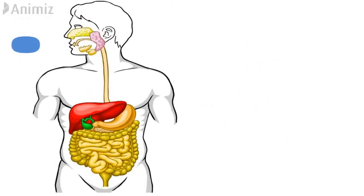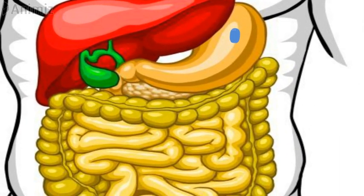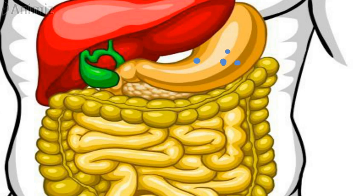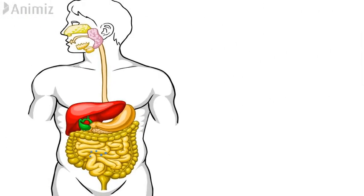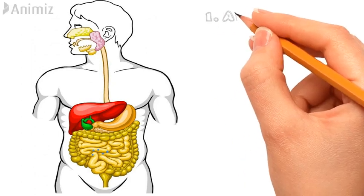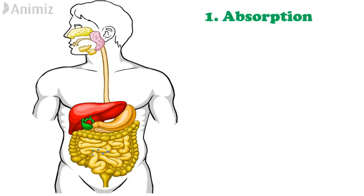Whenever we take a tablet, it goes to the stomach. When it comes in contact with water and gastric fluid, it disintegrates into small granules. These granules pass to the intestine, where the first step of pharmacokinetic parameters takes place, which is the absorption.